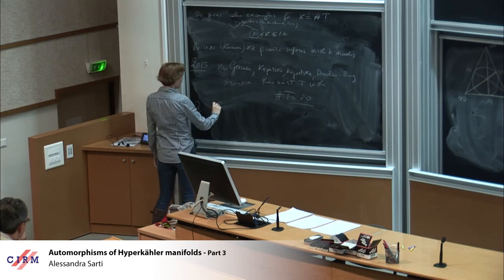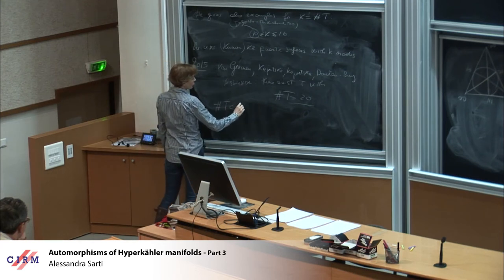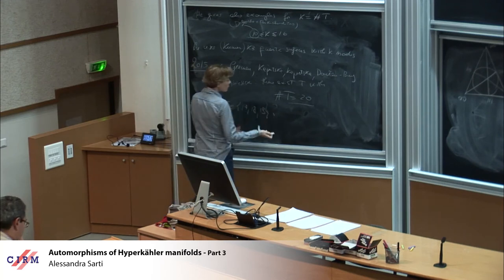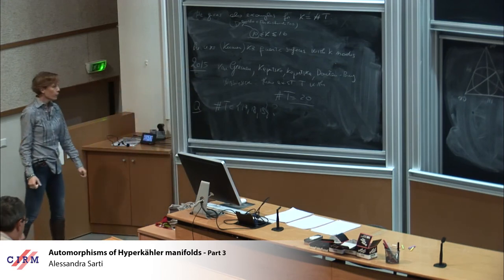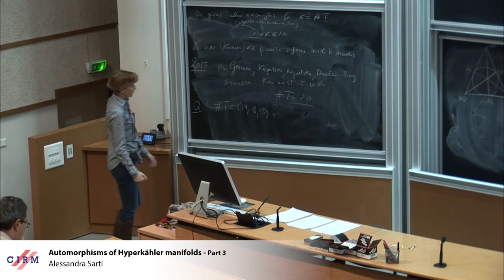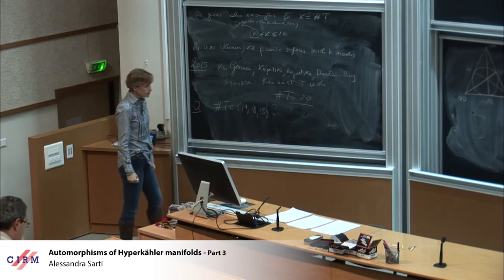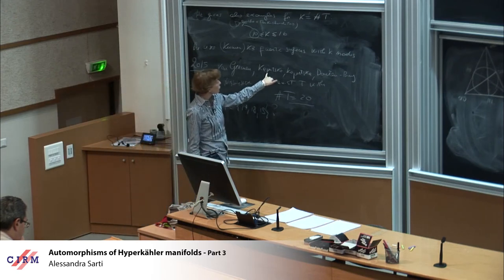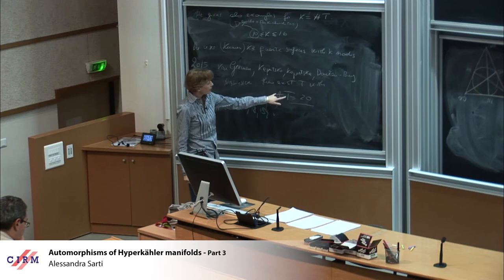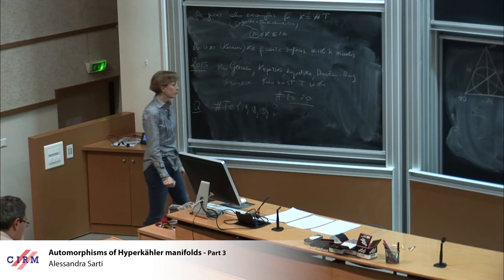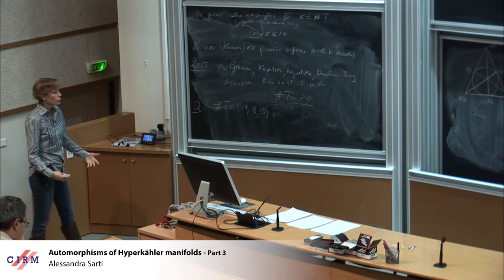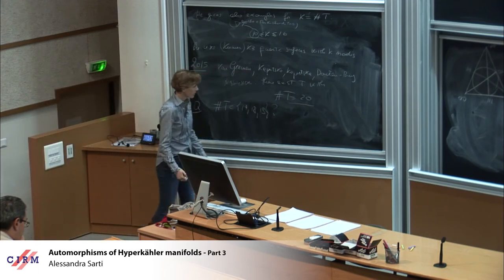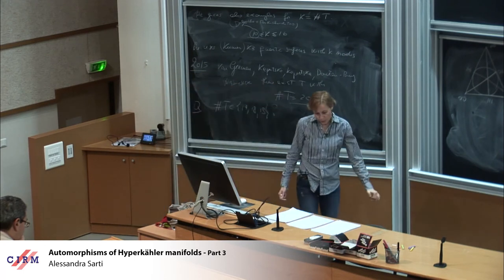And for a while, so the question was if the bound of 20 is a good bound. So there is an example. And in 2015 there was a paper of van Geemen, Kapustka, Kapustka, Tontenbier, and Wisniewski showing that this bound is possible. So there exists a T with cardinality of T equal to 20.